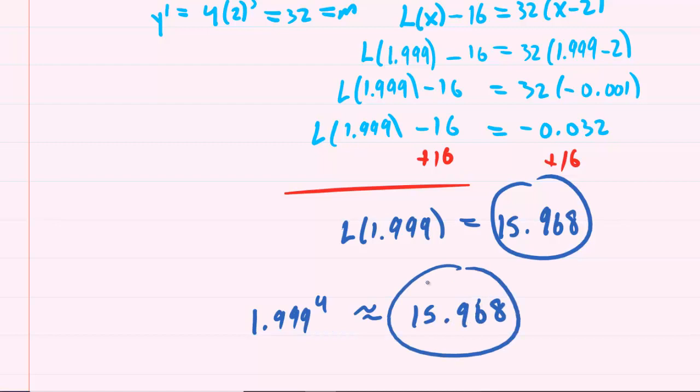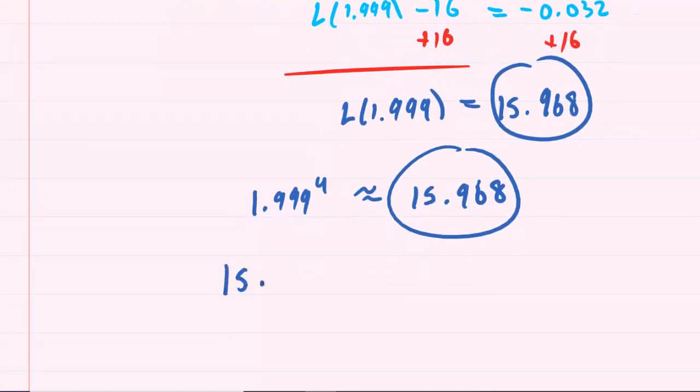By the way, if you're curious, 1.999 raised to the power of 4 is this very lengthy decimal, which we will see is incredibly close to our estimated value. You can see how close they are.